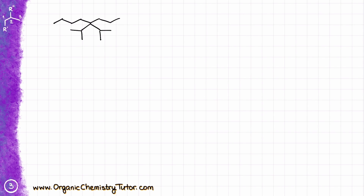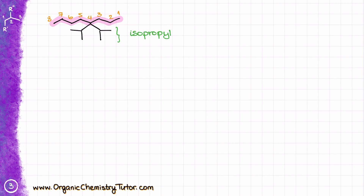Let's look at one more example. The first step is to find the longest continuous chain — in this case it's the eight-carbon chain. The next step is to determine the numbering direction to give the lowest possible numbers to the substituents. I would start numbering from the right side: one, two, three, four, five, six, seven, eight — because starting from the other side would put the substituents at the fifth carbon instead of the fourth. The substituents here are isopropyl groups — the common retained name — or, using the systematic IUPAC name, (1-methylethyl).